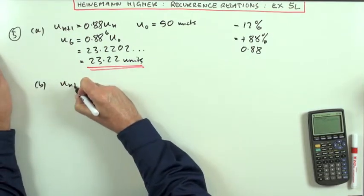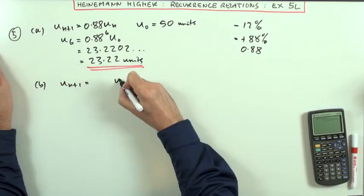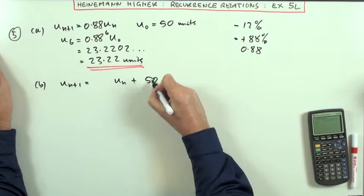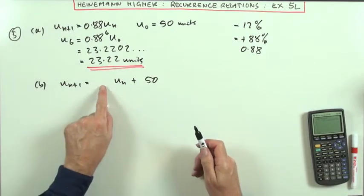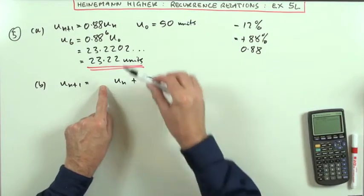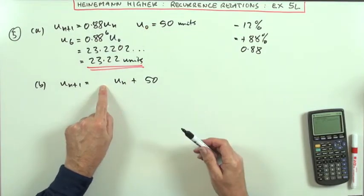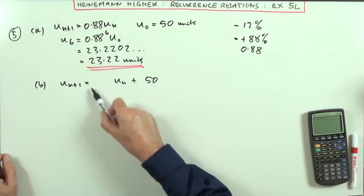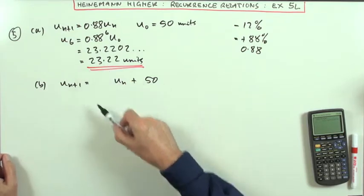Well first of all the recurrence relation would be this. It'd be Uₙ₊₁ equals something times Uₙ plus 50, because that's the next pill. But this time it's not happening every hour, that was the multiple for it happening every hour. How much would it fall by over 6 hours?